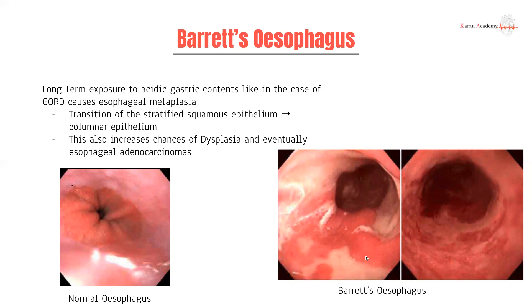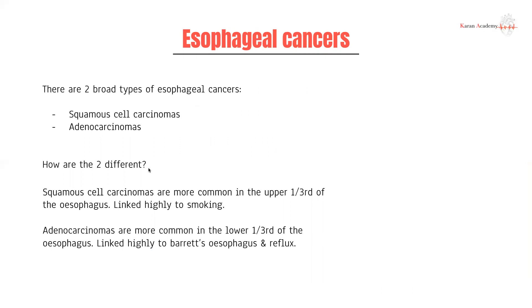Now let's talk about esophageal cancers. There are two types: squamous cell carcinomas and adenocarcinomas. Squamous cell carcinomas tend to present in the upper one-third of the esophagus, and adenocarcinomas in the lower one-third. Squamous cell carcinoma is linked to smoking, and adenocarcinoma is linked to Barrett's esophagus.